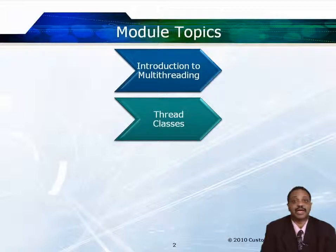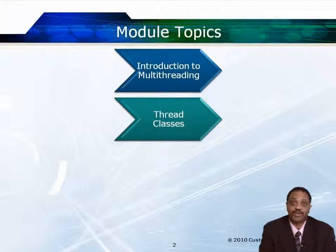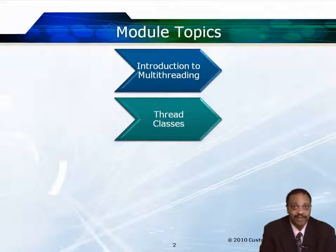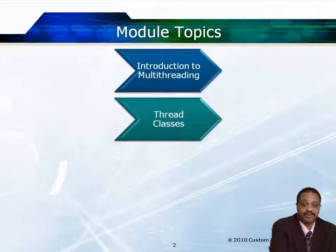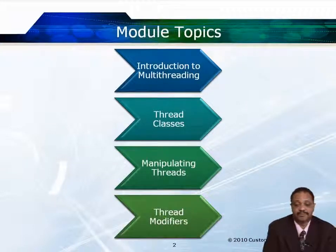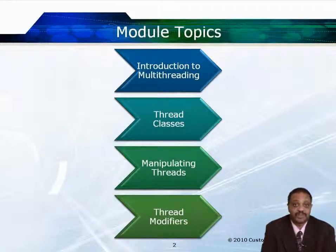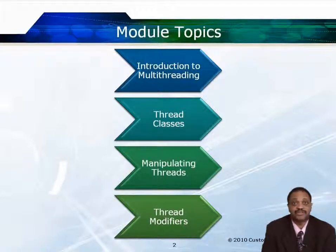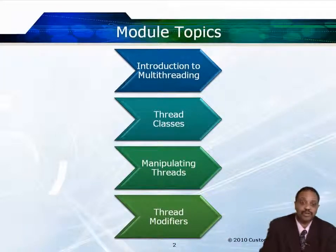Then we're going to talk about the different types of thread classes. When you want to create a new thread, you're going to create a class based upon the class called Thread. There's also an interface called Runnable that we can use if we have a class that's already been created and we want to give it thread capabilities. Then we're going to talk about how we go about manipulating the different threads, and we'll also cover thread modifiers to indicate that when a thread is running, it should get more of the CPU than normal or less.